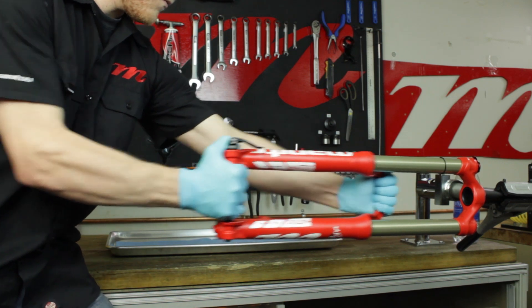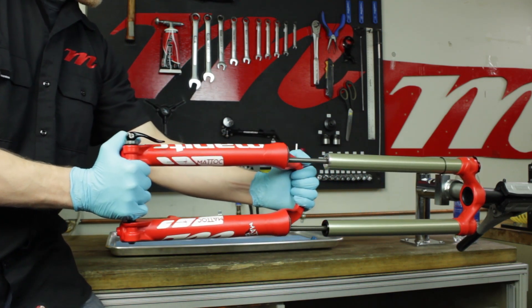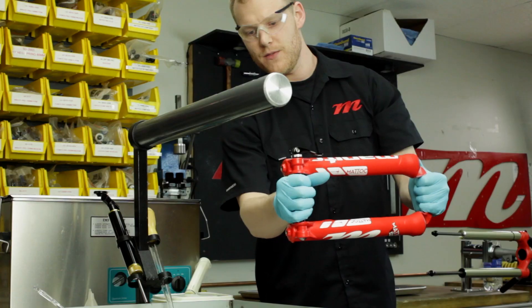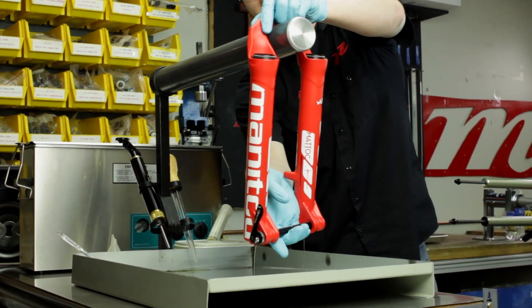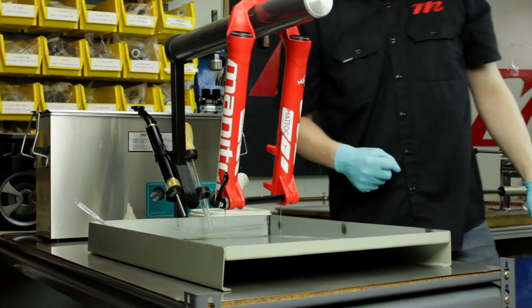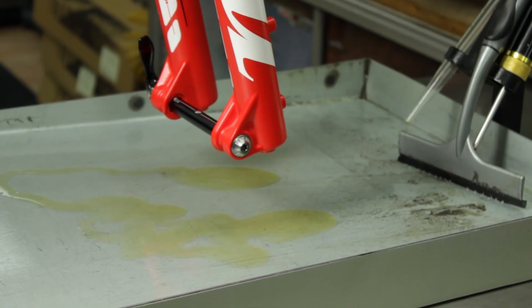Remove the outer casting and place over a tray or bucket. There will be about 15 cc or 15 milliliters of semi-bath fluid in each outer leg. You want to let this drain out before reinstalling the legs.